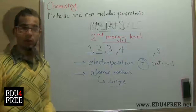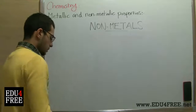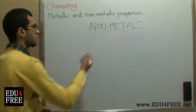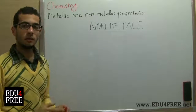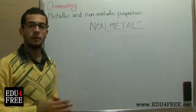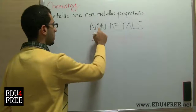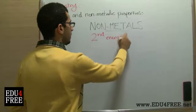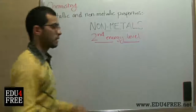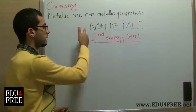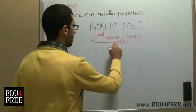Now we'll talk about nonmetals. Simply, nonmetals are the opposites of metals. In their outermost energy level, the outermost energy level carries more than half of the capacity of this energy level. For example, as with metals, consider the second energy level. If the atom is an atom of a nonmetal and the second energy level is the outermost energy level, half of the capacity is four electrons.